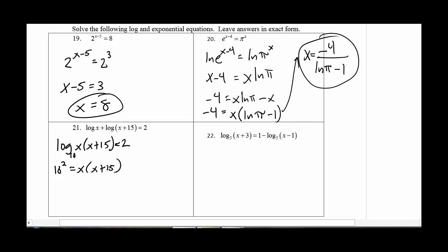So that translates into 10 squared equals x times x plus 15. Well, that's just a good old-fashioned equation at that point. So 10 squared is 100. And that's x squared plus 15x. I'll bring the 100 over. So I get 0 equals x squared plus 15x minus 100.